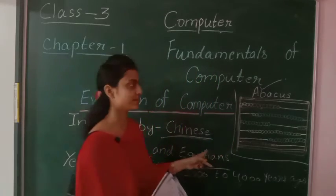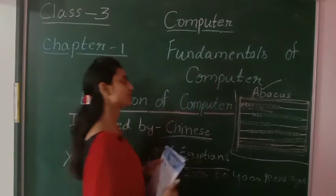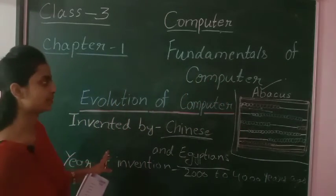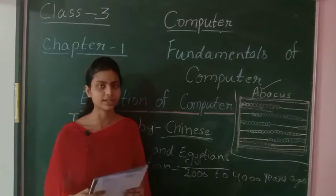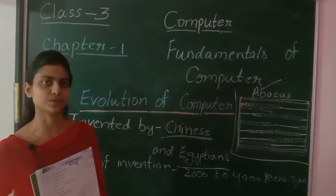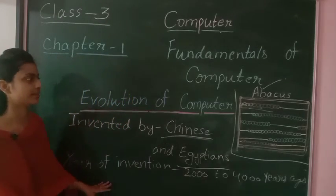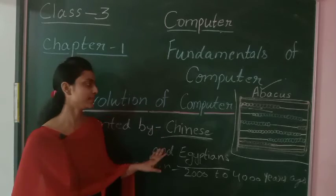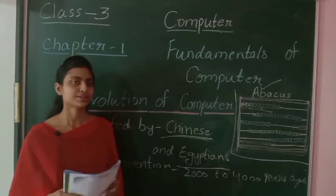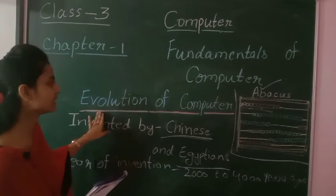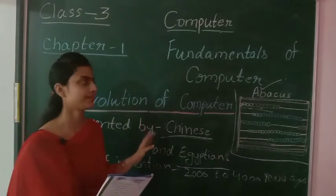This is your Abacus — it has a frame and movable beads, and you can do simple calculations only; not much more on a higher level. It was the evolution of computers — it was the first step. In our next class, we will go through the second step which is Napier's Bones. I think everyone has understood what evolution is — a gradual, slow change taking place over a time period. Thank you.